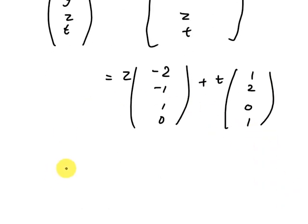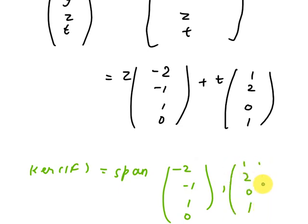So kernel F is, kernel F equal to span of minus 2, minus 1, 1, 0, comma 1, 2, 0, 1. That is the value of kernel.